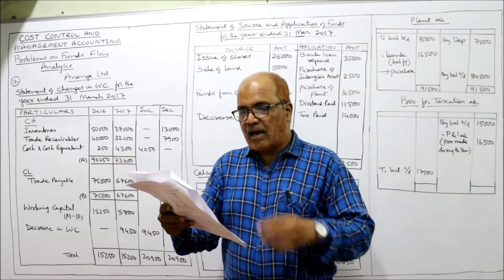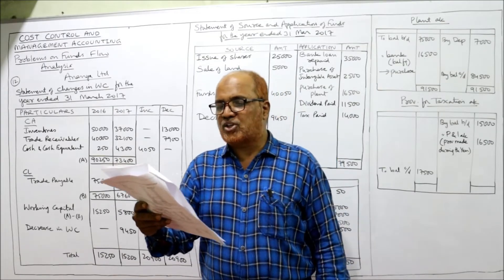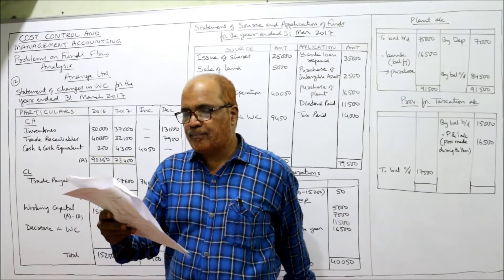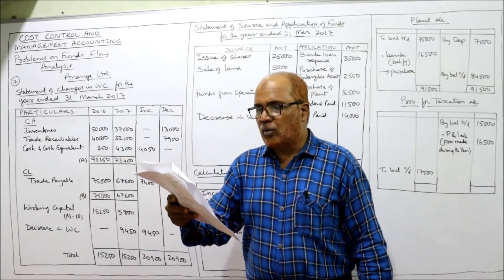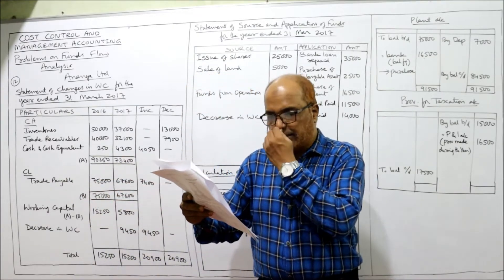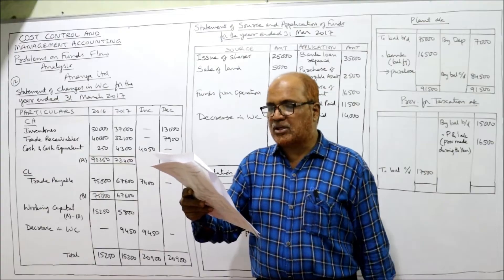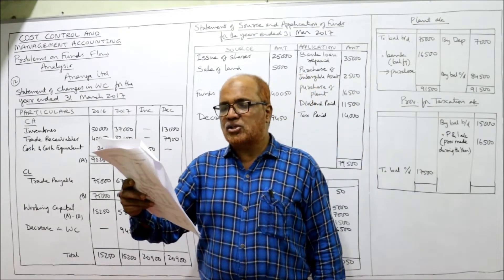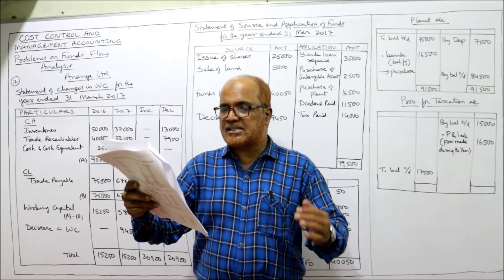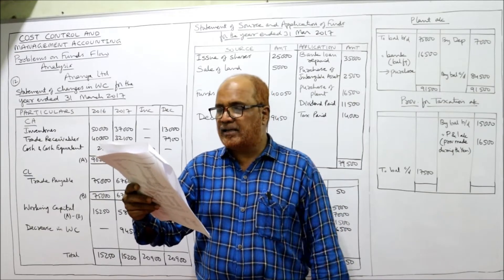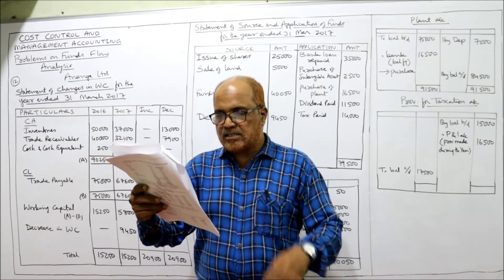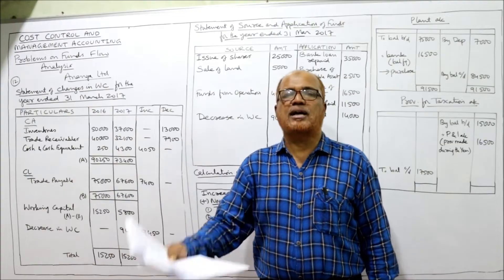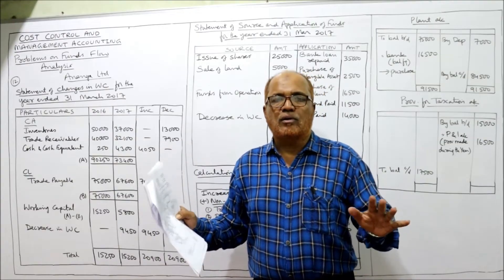The equity and liabilities include: shareholders' fund — share capital and reserves and surplus (note number 1); non-current liability — bank loan; current liabilities — trade payable, short-term provisions, and provision for taxation. Assets include: non-current assets — fixed assets (tangible and intangible); current assets — inventory, trade receivable, and cash and cash equivalents. First, we will make the statement of changes in working capital to find the net increase or decrease.